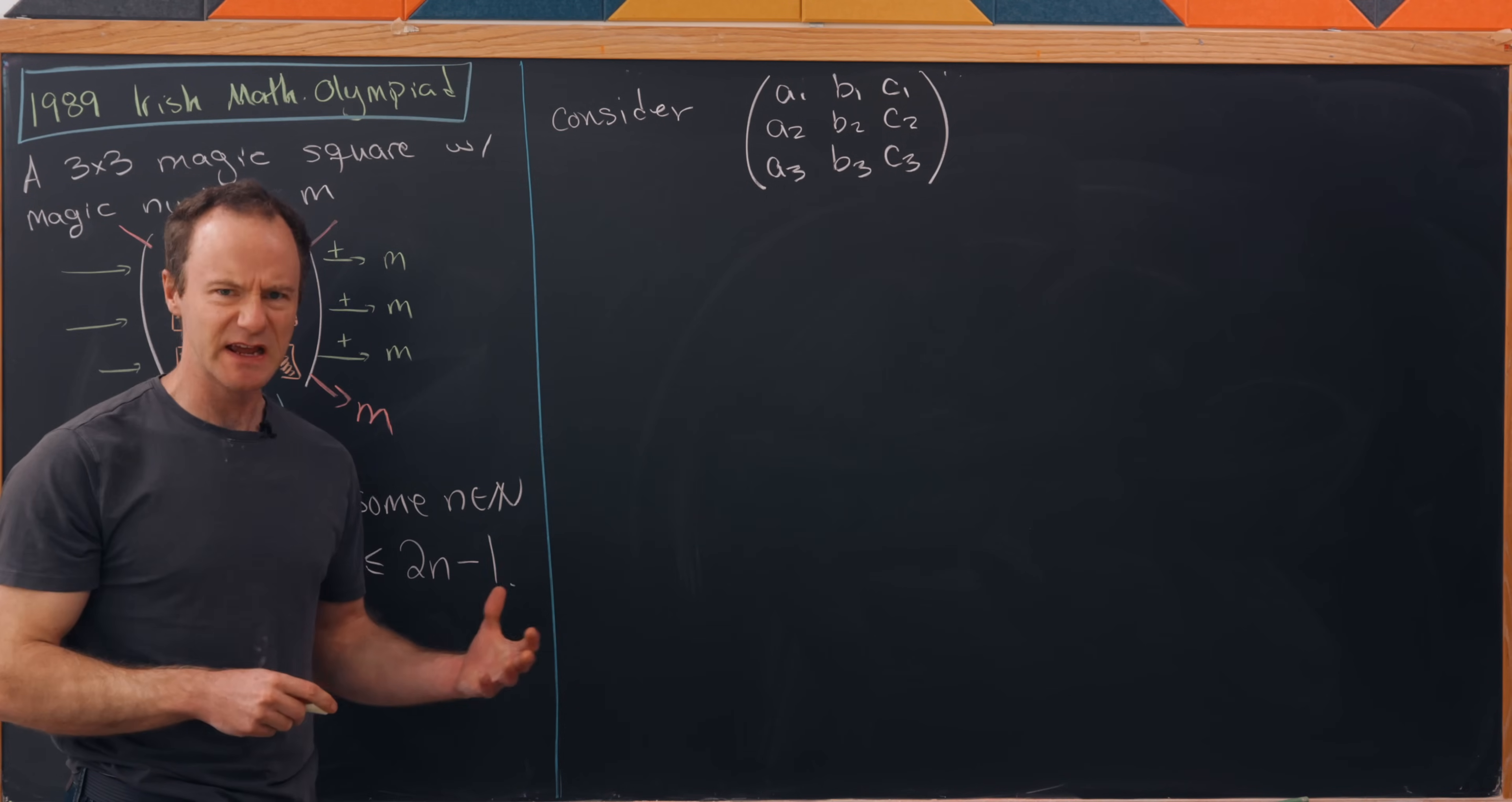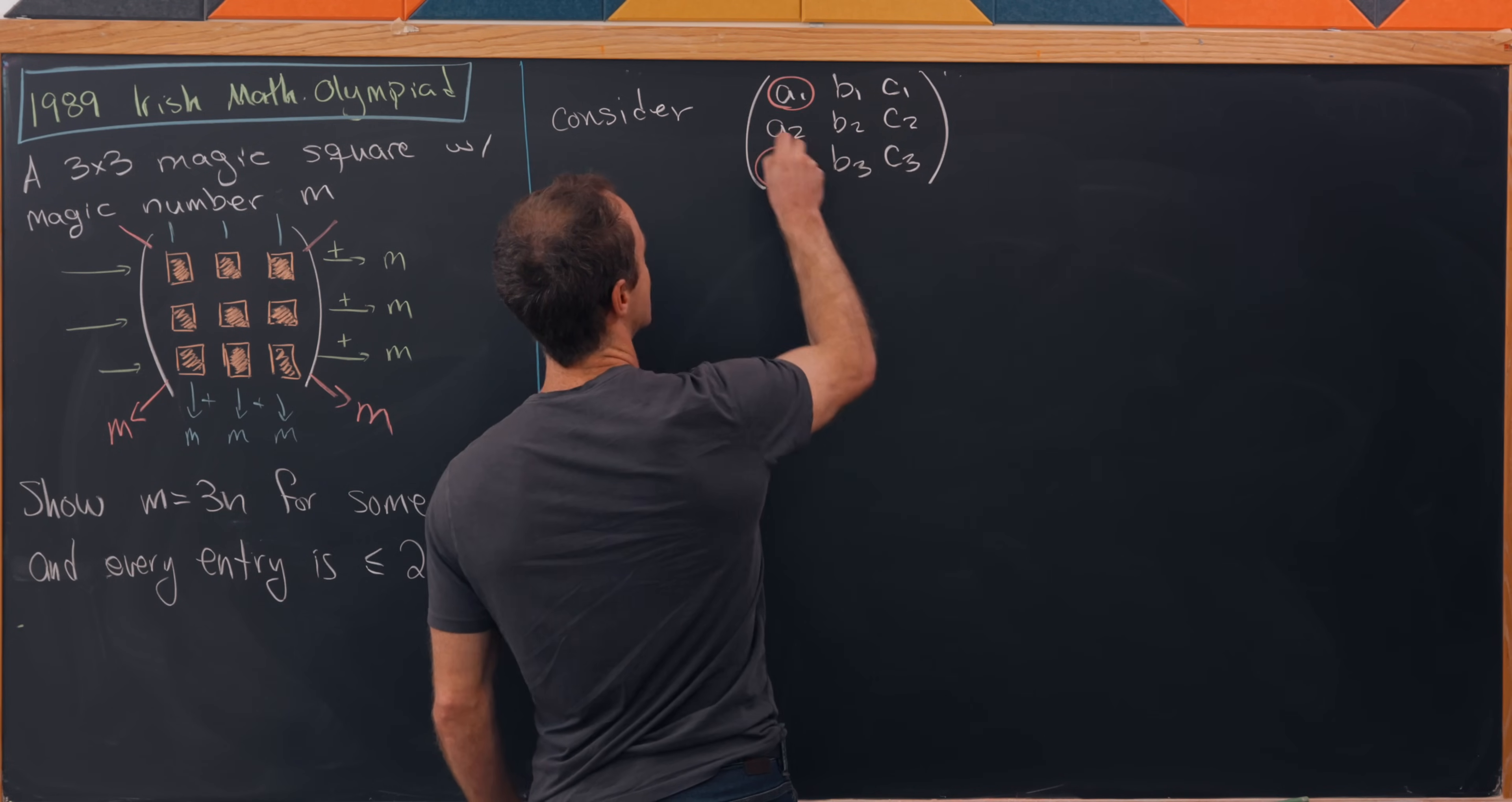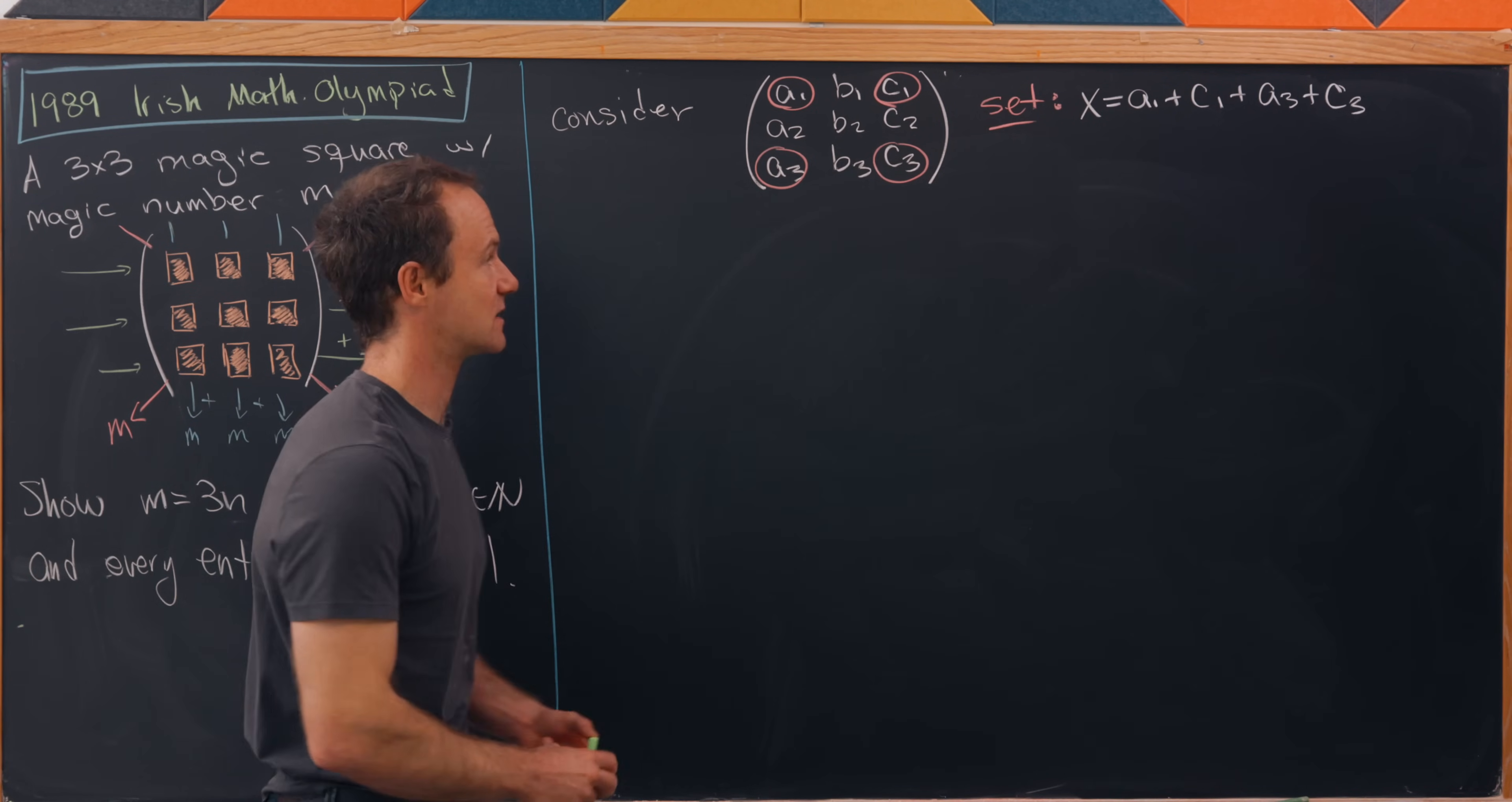The trick here is to instead of looking at the sum of the rows, the columns, and the diagonals, break this down into more manageable pieces. I'll look at the sum of all of the diagonal entries, not the diagonals but just the entries on the diagonal. Let's set x equal to a1 plus c1 plus a3 plus c3.